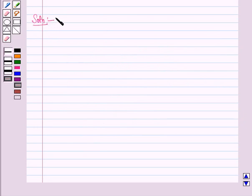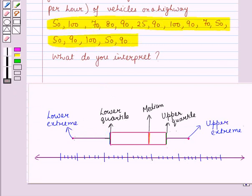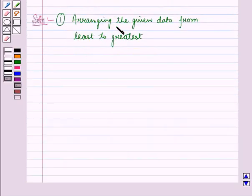Now let us start with the solution of the given question. Here we have to construct a box and whisker plot for this given data. In the first step we will arrange the given data from the least to the greatest.